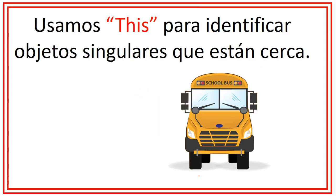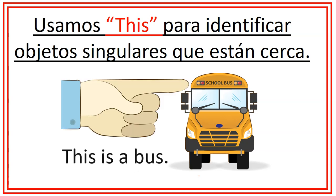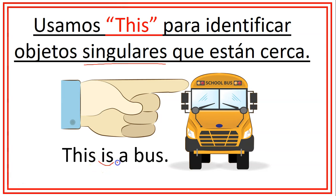Vamos a empezar con this. Utilizamos this para identificar objetos singulares que están cerca. Por ejemplo, this is a bus — este es un camión. Recordemos que tenemos que utilizar el verbo to be is y la palabra a or an. Usamos a cuando la siguiente palabra comienza con una consonante, o an cuando la palabra comienza con una vocal. Otra cosa importante es que en inglés no hay género — this puede referirse a un objeto masculino o femenino.